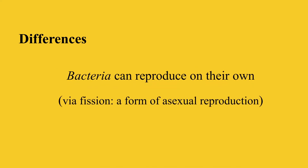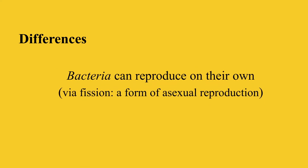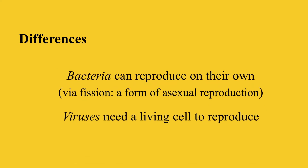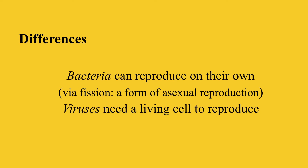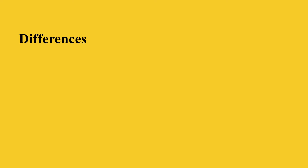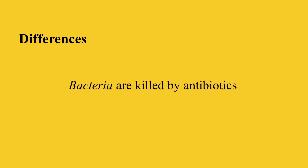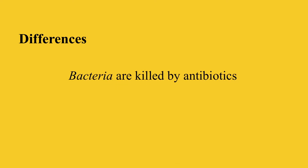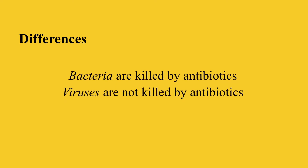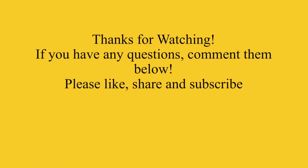Bacteria can reproduce on their own via a process known as fission. In contrast, viruses cannot reproduce on their own — they need a living cell to reproduce. And finally, bacteria are killed by antibiotics, but viruses are not.